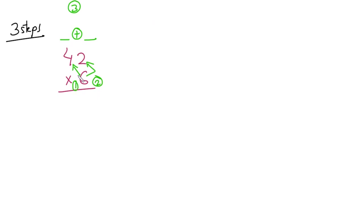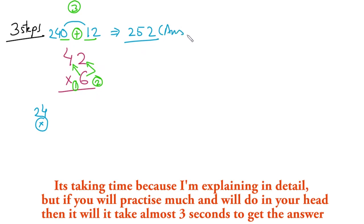First step: multiply this number by this number. 6 multiplied by 4 is 24, but we don't write 24 as I told you earlier, we write 240. Second step: 6 multiplied by 2 is 12, so we write 12. Third step: add these numbers. 240 plus 12 is 252. So 252 is our answer.